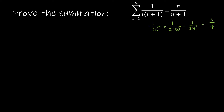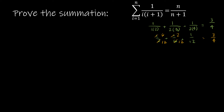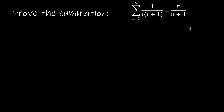We could do the math to verify: 1 over 2, plus 1 over 6, plus 1 over 12. Converting to twelfths: 6 twelfths plus 2 twelfths plus 1 twelfth equals 9 twelfths, which is 3 fourths. So we've essentially shown that n equals 3 is true. But that's not really part of the proof — I just wanted to make sure you understood the formula.